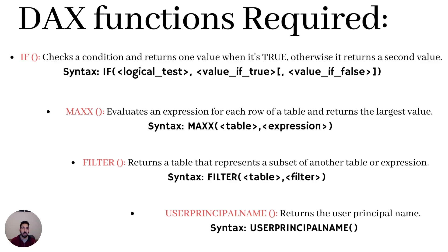The last DAX function we're going to use is USERPRINCIPALNAME. As I explained in previous videos, USERPRINCIPALNAME corresponds to your email address. For every account related to Power BI, it has a corresponding username or email address. So we're going to filter our table based on this.